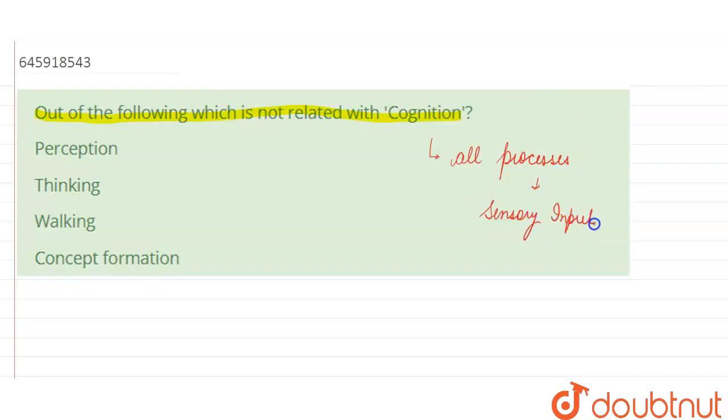We are adding a sensory input. That input is transformed. Sensory input transformed. Then we can say that it goes reduced, elaborated, stored, recovered, and used.